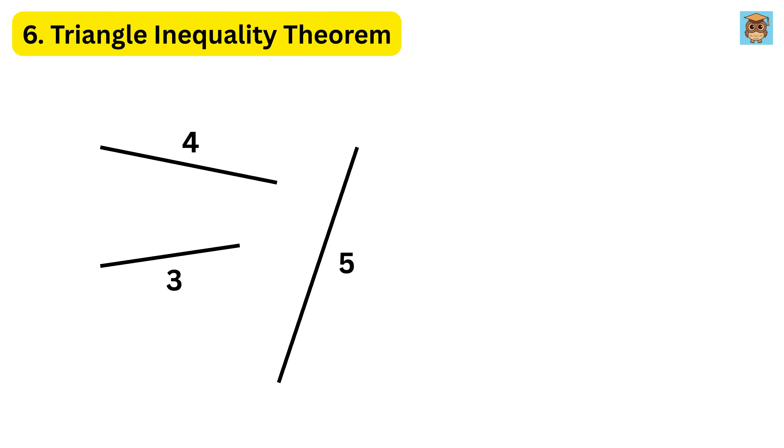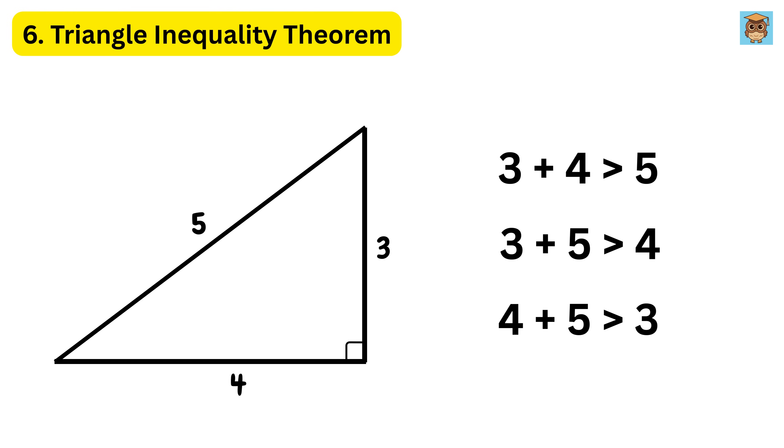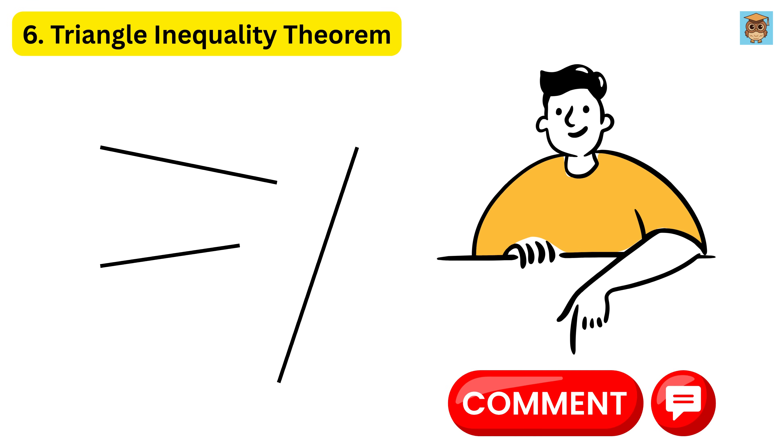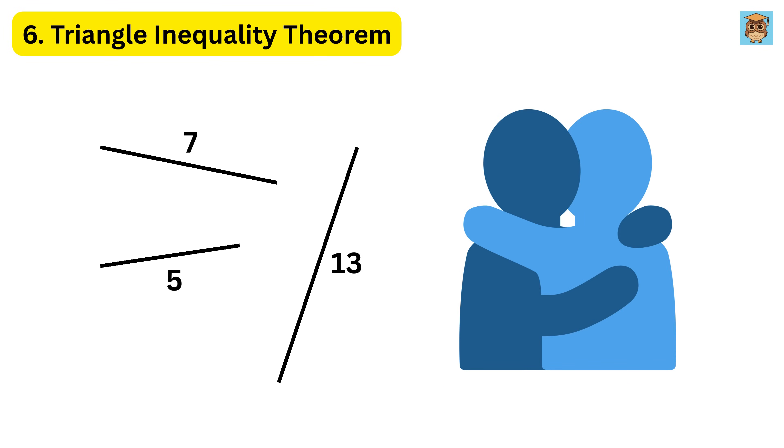But if you have 3, 4, and 5, then 3 plus 4 is 7, more than 5. 3 plus 5 is 8, more than 4. And 4 plus 5 is 9, more than 3. That works. Now let me know in the comments, can sticks of length 5, 7, and 13 make a triangle? Every right answer will get my hug.